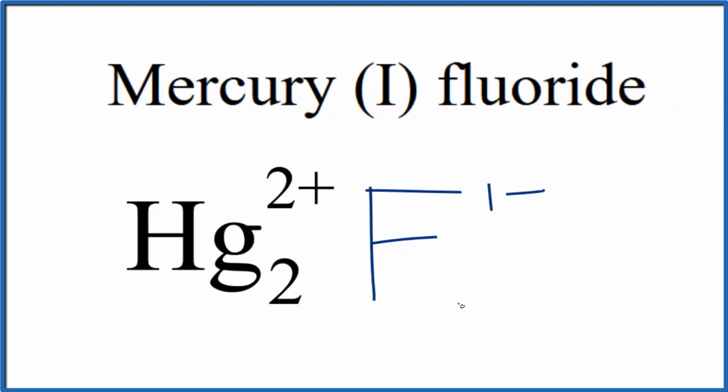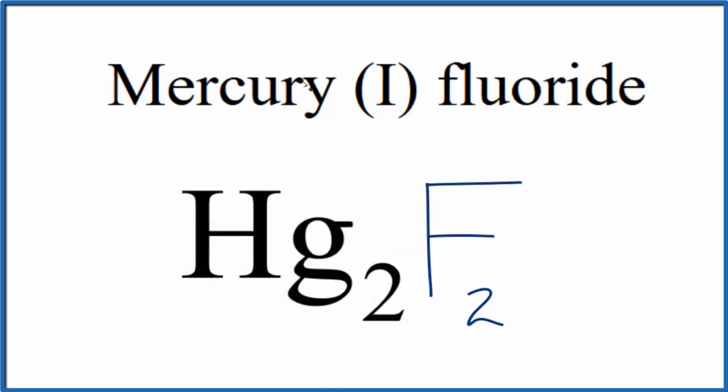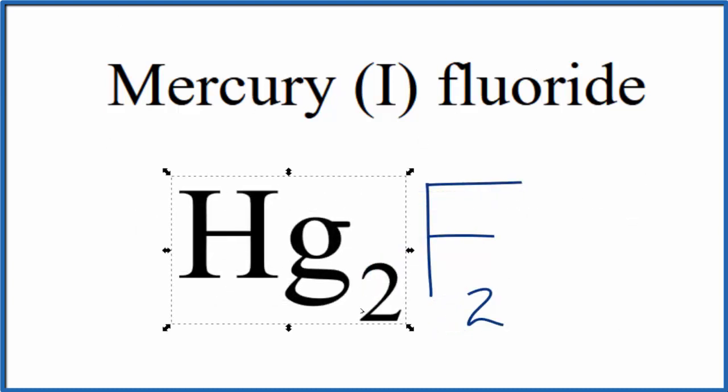If we had two fluoride ions—two times 1-—that would balance out the 2+, giving us a net charge of zero. So this is the formula for mercury (I) fluoride: Hg2F2. If you were given this formula and asked to write the name for Hg2F2...